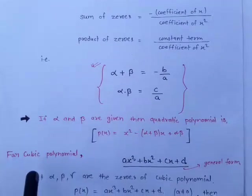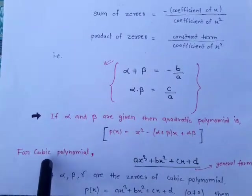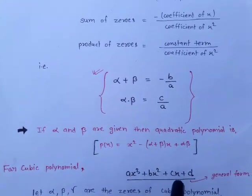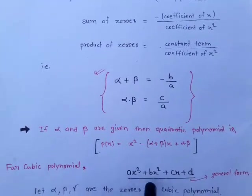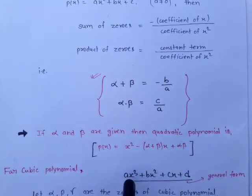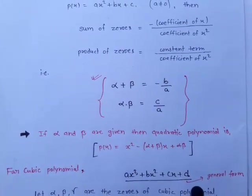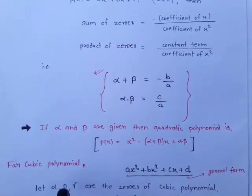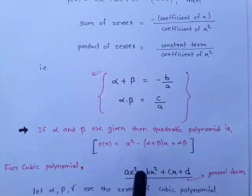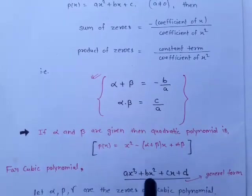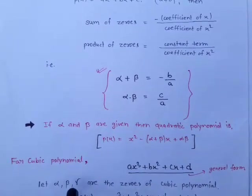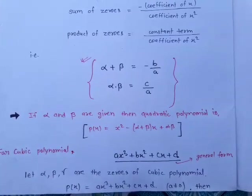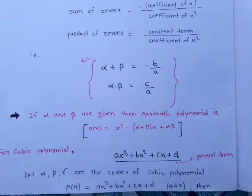Now we move to the next polynomial: the cubic polynomial. The general form of a cubic polynomial is ax³ + bx² + cx + d, where a ≠ 0, and a, b, c, d are constants. Since the highest power of the variable is 3, there are three zeros. Let alpha, beta, and gamma be the zeros of p(x) = ax³ + bx² + cx + d, where a ≠ 0.